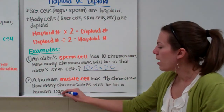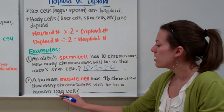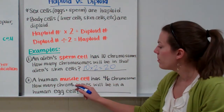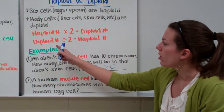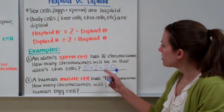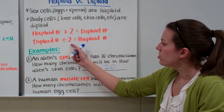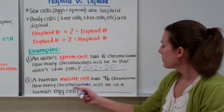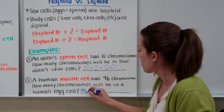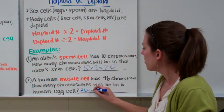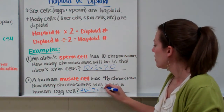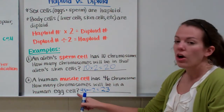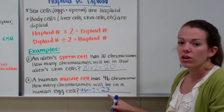They want to know how many chromosomes are in an egg cell. Egg cells are haploid, so we're going from diploid to haploid. Therefore, we need to divide forty-six by two to get our haploid egg cell chromosome number. Forty-six divided by two is twenty-three. So the human egg cell has twenty-three chromosomes.